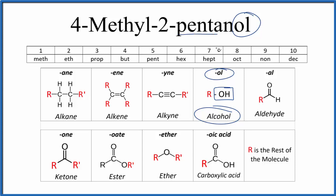The pent tells us we have five carbons. So we have a chain of five carbons and one of the carbons is going to be attached to an alcohol. That's going to be carbon number two. On the fourth carbon, we'll have a methyl group.